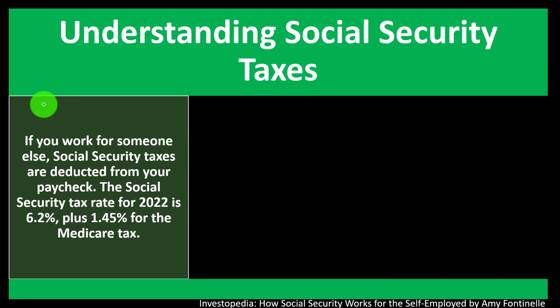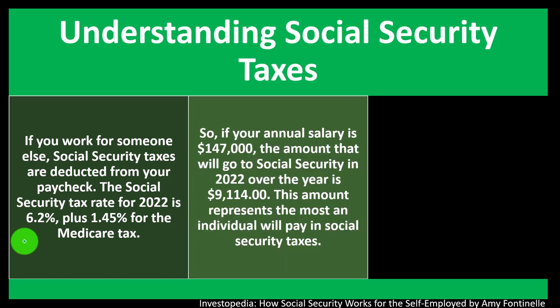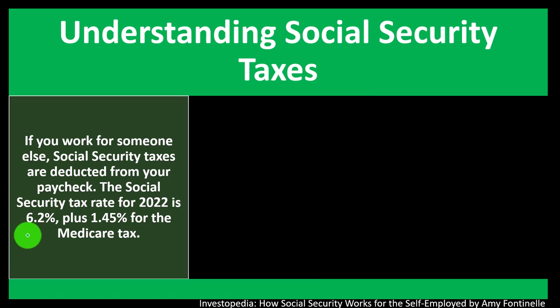If you work for someone else, Social Security taxes are deducted from your paycheck. The Social Security tax rate for 2022 is 6.2%, plus 1.45% for Medicare taxes. So what goes under the category of payroll taxes includes the Social Security taken out of your paycheck — your half is 6.2%, plus Medicare at 1.45%. When we pay into Social Security, that's a fairly large percent — 6.2% — and the employer is paying their half as well.